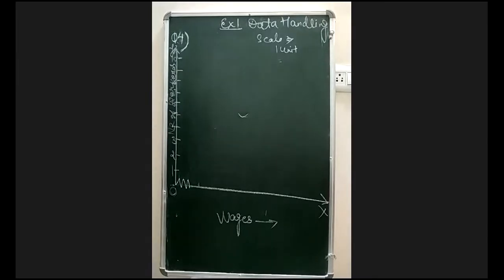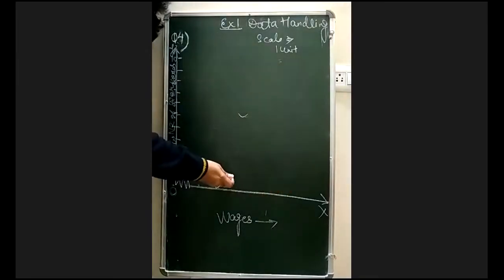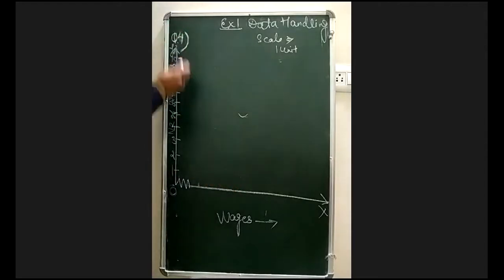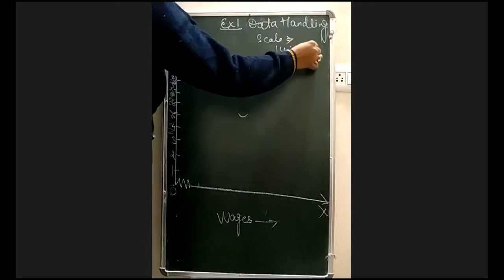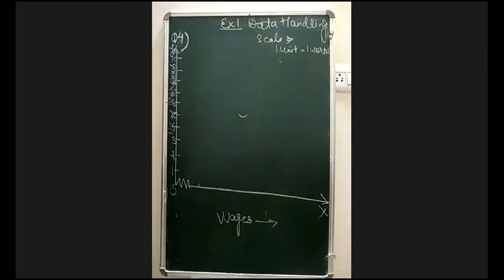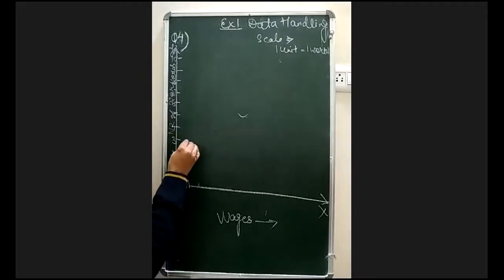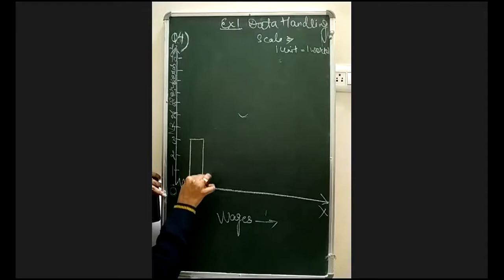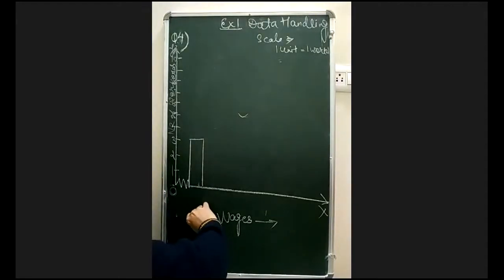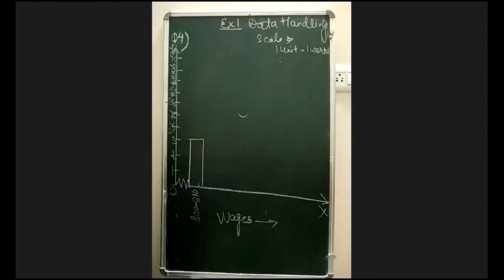When you set the scale, this side is fixed for intervals and you only change the values on the y-axis. For the y-axis, one unit is equal to one worker. The first bar is for the interval 800 to 810, which has 3 workers, so we draw a bar of height 3 starting from 800.